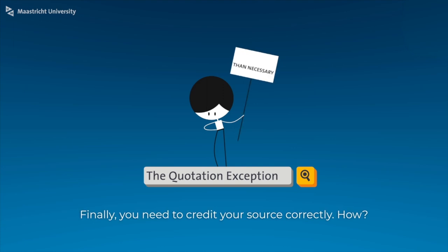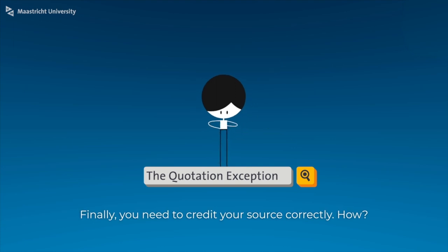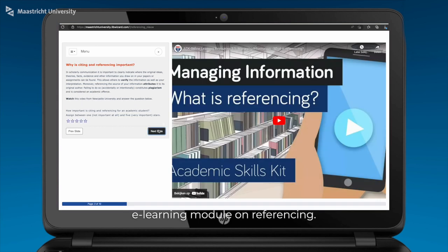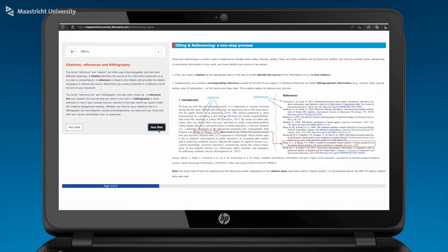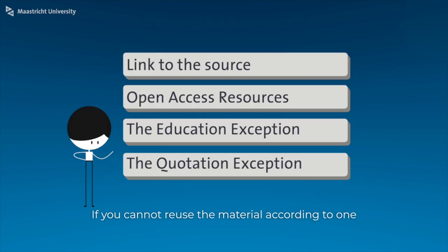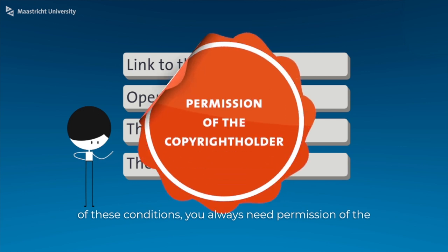Finally, you need to credit your source correctly. Check out the library's e-learning module on referencing. If you cannot reuse the material according to one of these conditions, you always need permission of the copyright holder before you can use it.